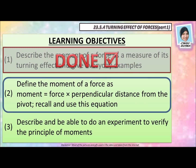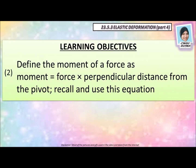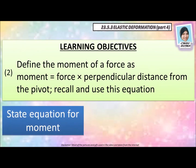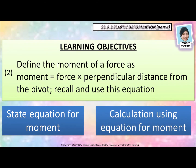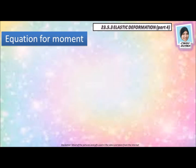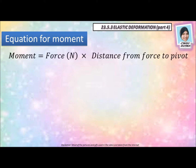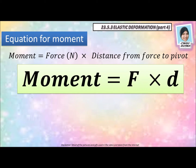The second learning objective: you'll be learning the equation for moment and also calculation using the equation for moment. The equation for moment is force times distance from force to pivot. Or simply, moment is equal to F, which is force, times D, which is distance from force to pivot.